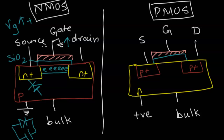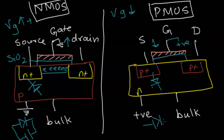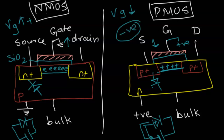The PMOS works opposite to the NMOS. The bulk is connected to a positive terminal. At the starting stage, when the gate is also positive, there is no potential difference, the junction is reverse biased, no channel is formed, and the transistor is off. When we decrease the gate voltage, the diode's p-type connects to a negative terminal and the n-type to positive. The holes in the p-type get attracted toward the negative terminal near the gate, forming a channel. So the PMOS turns on when the gate voltage is negative.